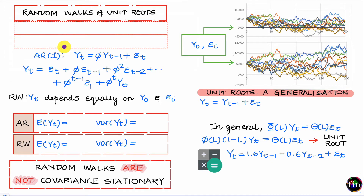In this video, we will talk about random walks and unit root processes. This is FRM Part 1, Book 2, the chapter on non-stationary time series.